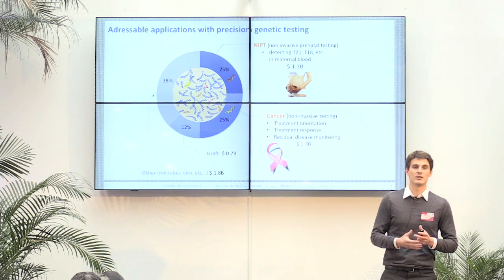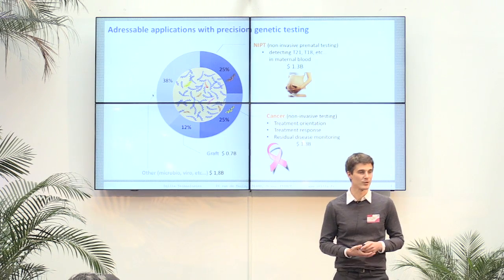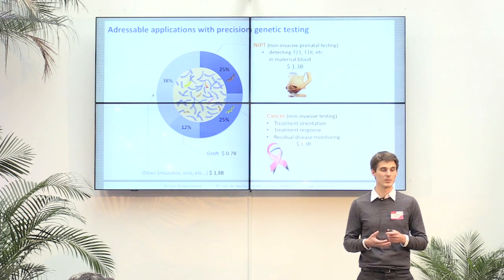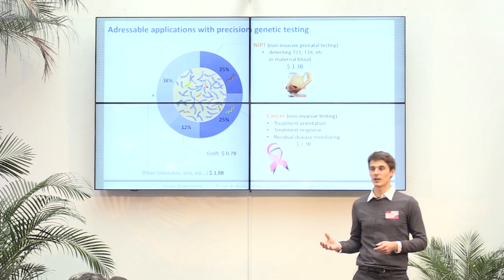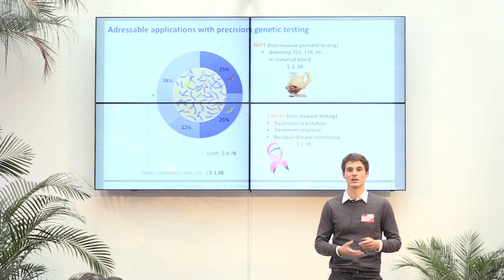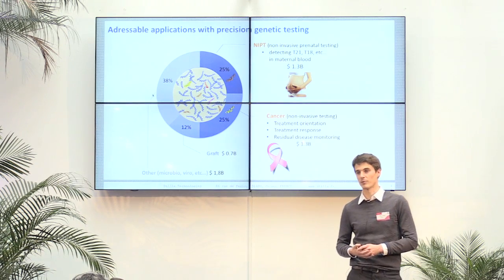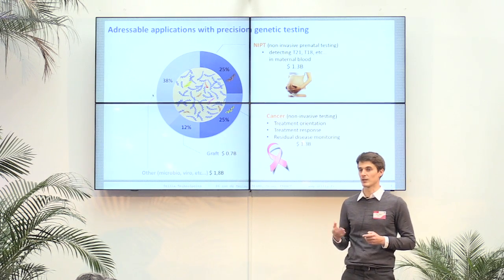There are really big market opportunities for applications using those traces of DNA. Cancer I talked about. There's also non-invasive prenatal testing — if you have a pregnant woman, you have DNA from the baby in the mother's blood, again in very small traces. If you can detect those traces, you can see very early on if the baby has a genetic defect. A second big application would be graft monitoring, very similar to cancer. If you graft an organ on someone, it's different DNA, so you'll see DNA from that graft in the patient's blood as traces. If those traces start increasing, it means the graft is dying, and you can take action to prevent that from happening.